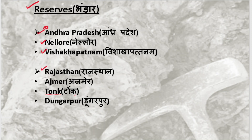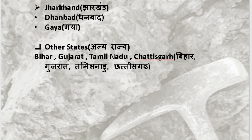Then we will see Rajasthan, where the Mica-bearing areas are Ajmer, Tonk, and Dungarpur. After Rajasthan, the Mica reserves are found in Jharkhand, specifically in Dhanbad and Gaya. Other states with significant Mica quantities include Bihar, Gujarat, Tamil Nadu, and others.